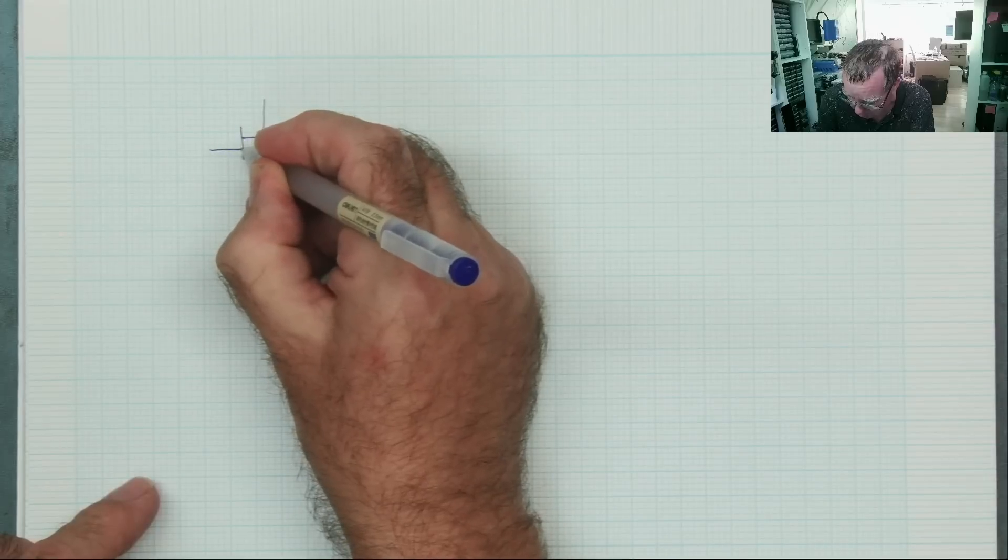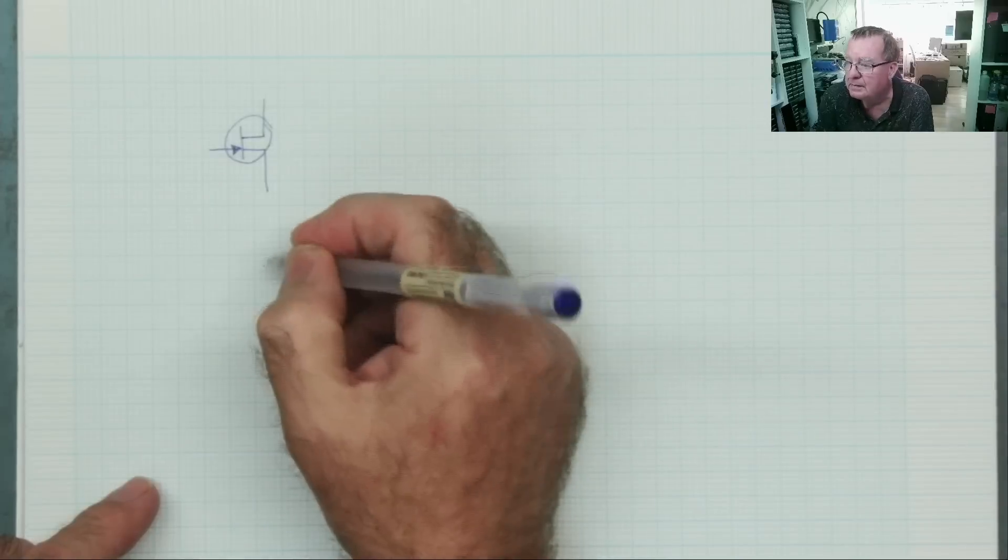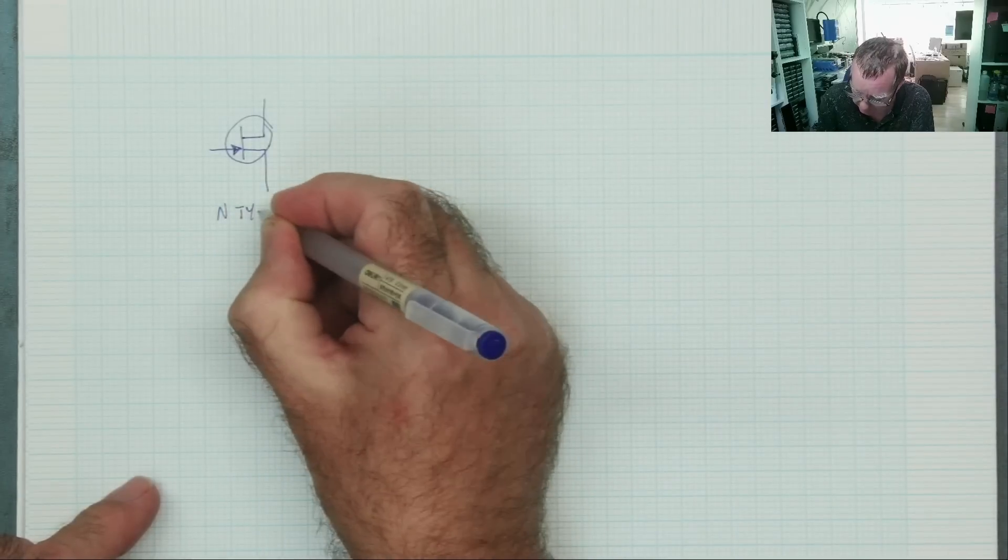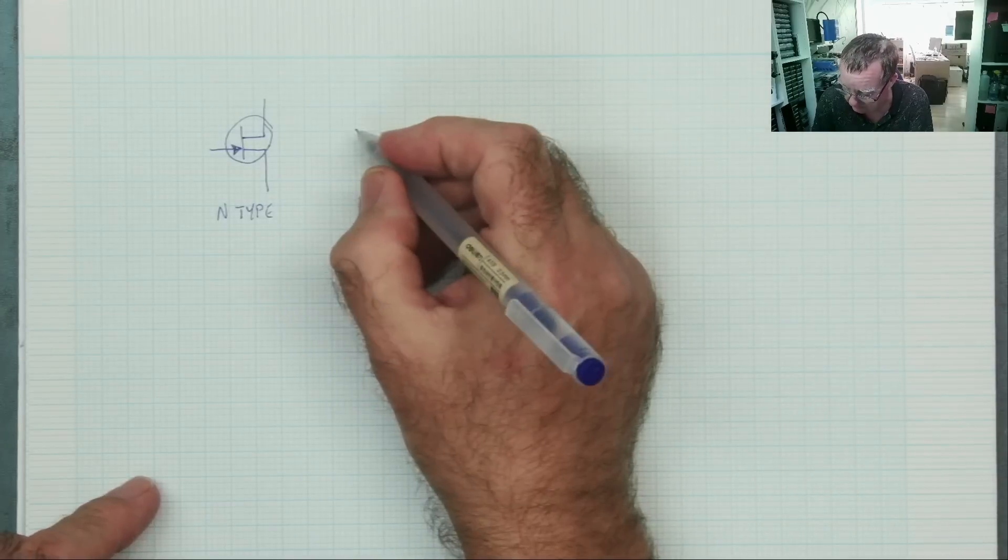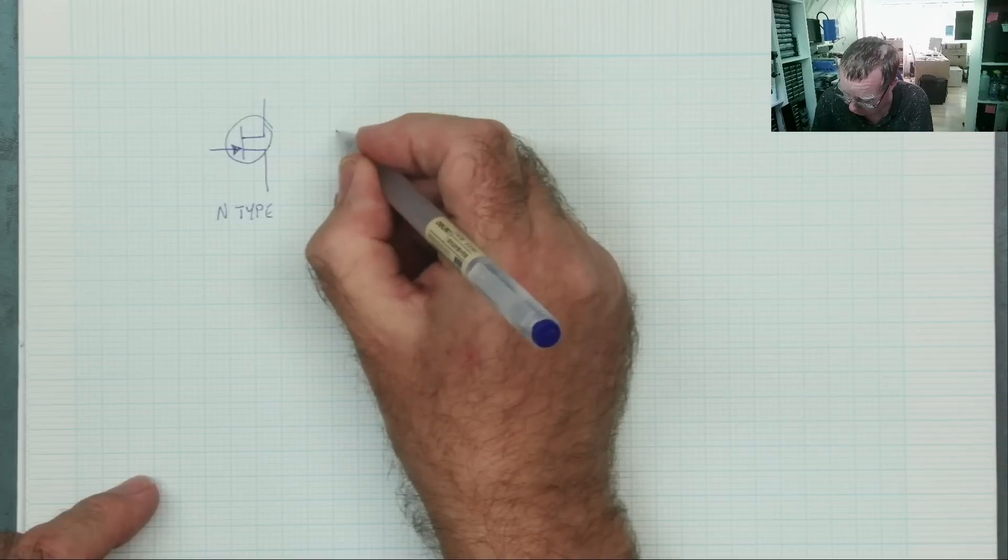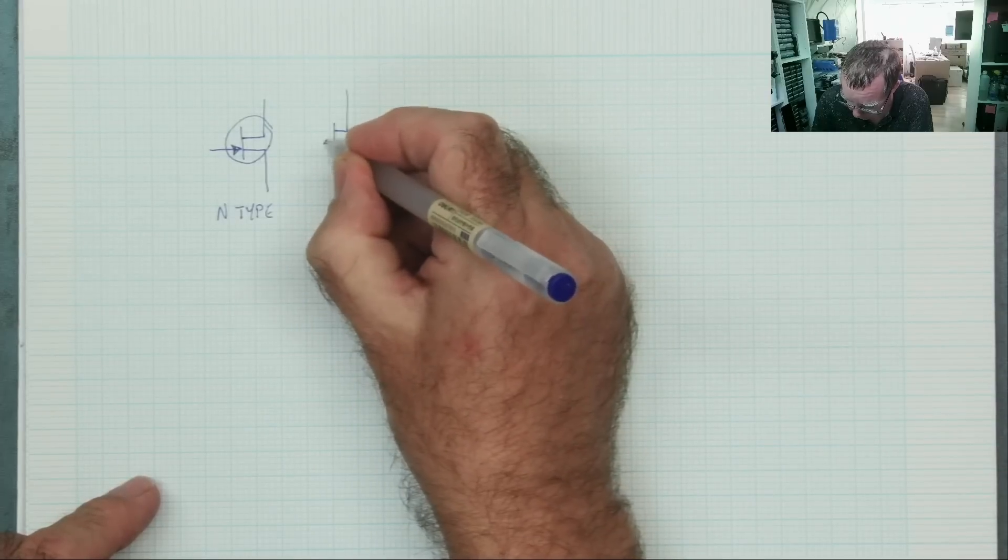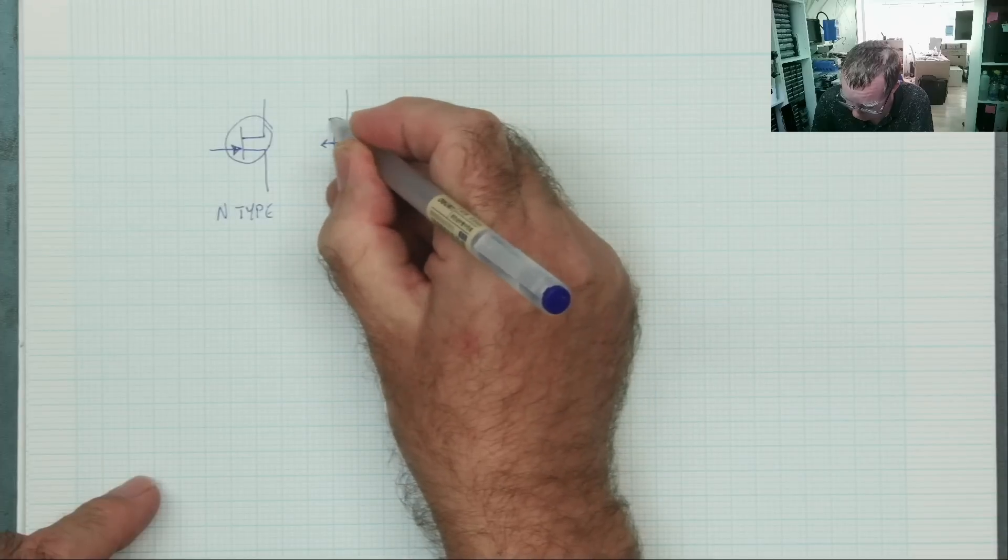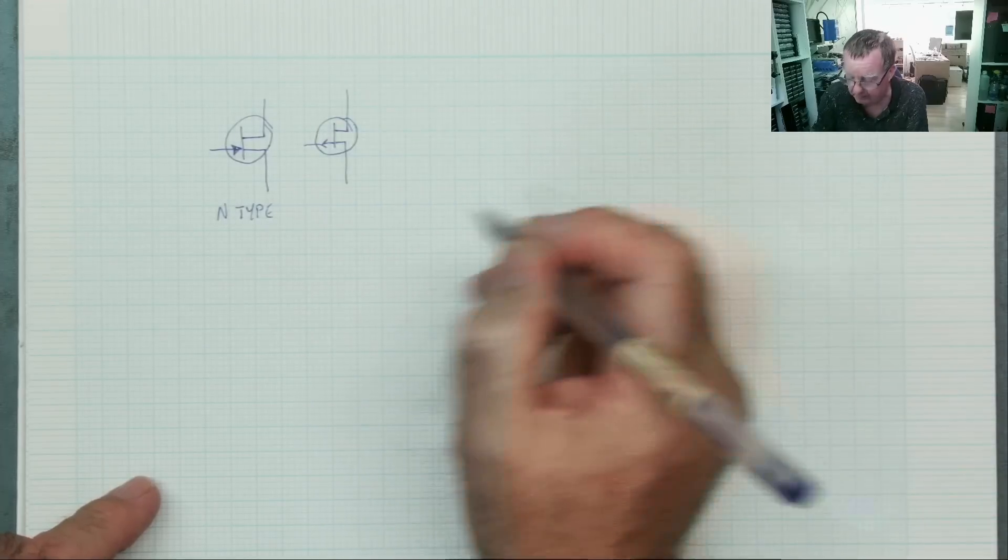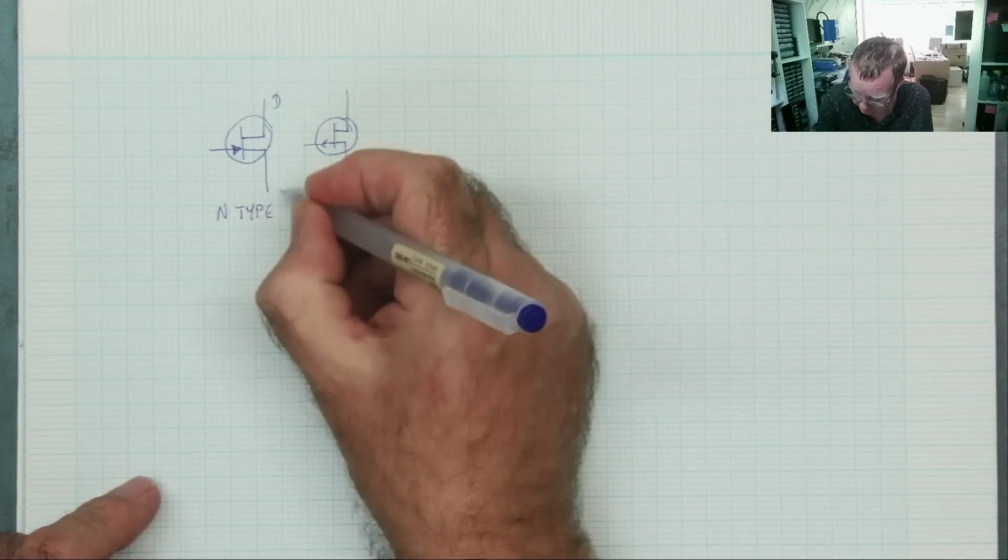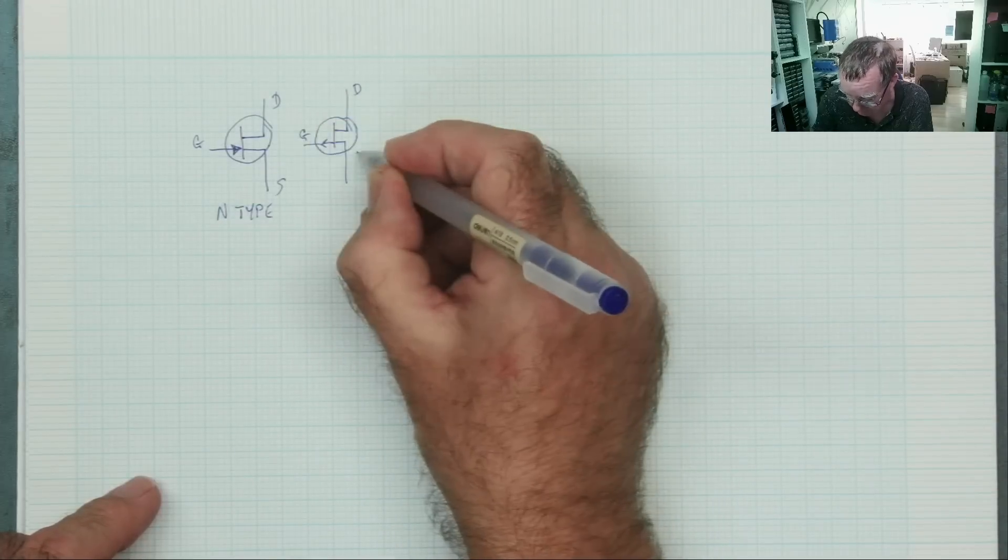So we have a symbol like so. This is an N-type. So just as we have with MOSFETs, we have N-type and P-type. Okay, the P-type looks like this. And the pins on here are drain, source, gate, just the same as you would have on a MOSFET. Drain, gate, source.